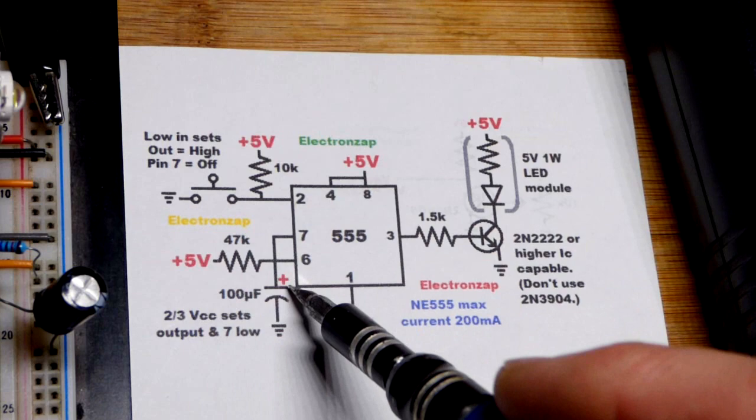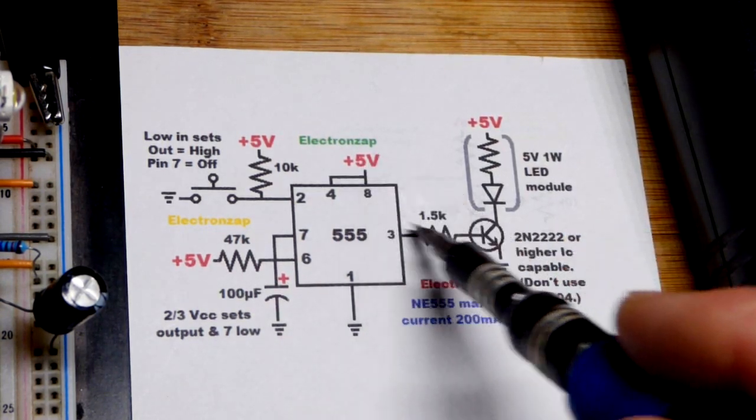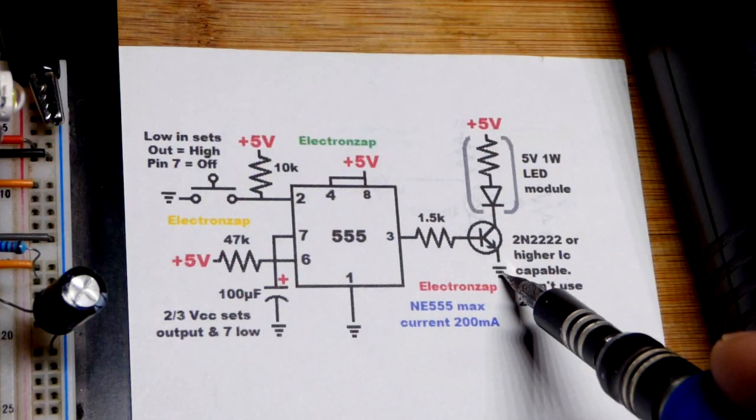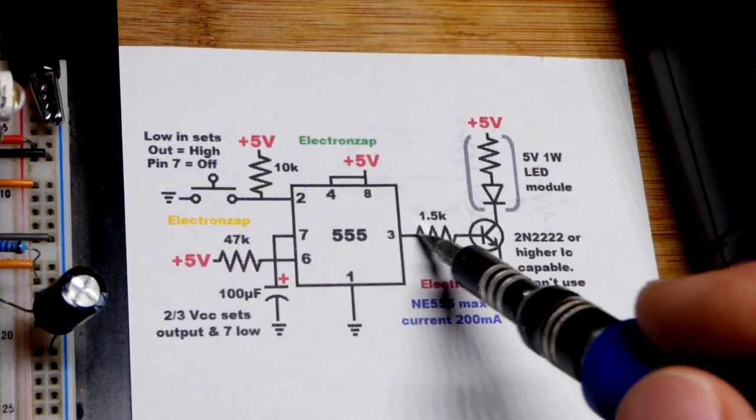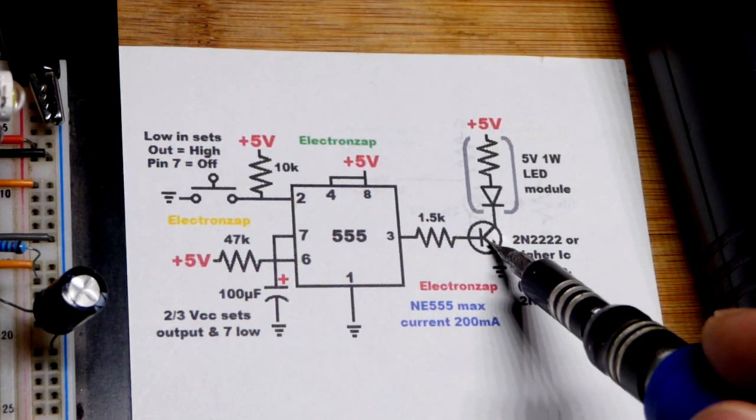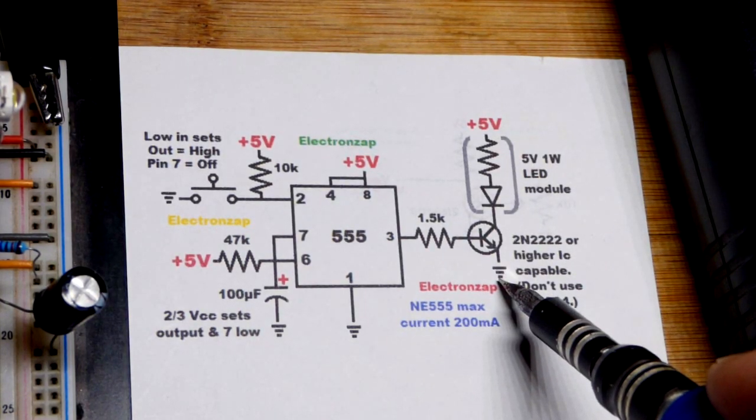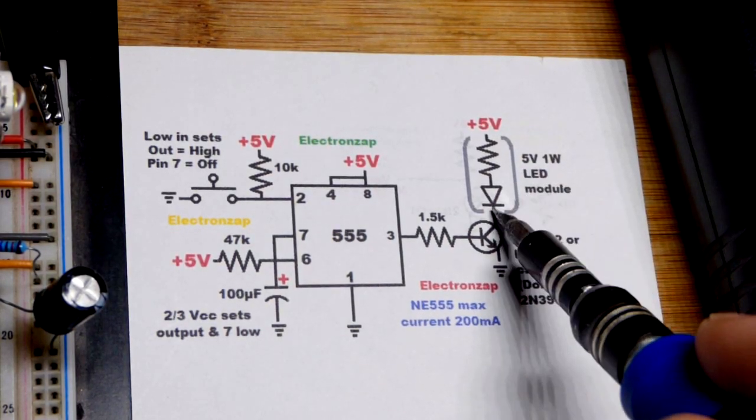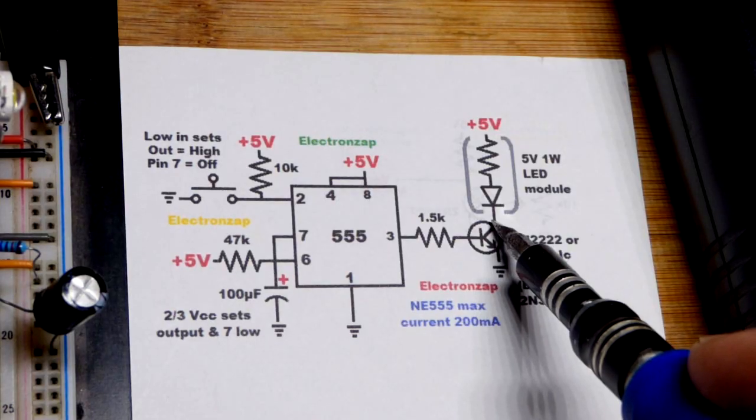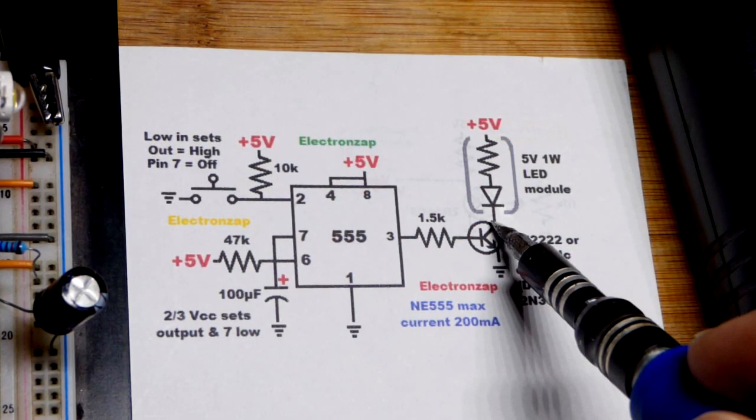It keeps the transistor off and the LED off until in this case you press a button, give a low input to pin 2. Then the capacitor is going to charge. Same time, the output goes high, as good as it can get. It doesn't get the complete 5 volts, but maybe 4 volts in this case. But it's going to push current through the transistor, turning the transistor on and getting our LED, I call it a module, to light up. So it's a 5 volt module. You can just put 5 volts across it.